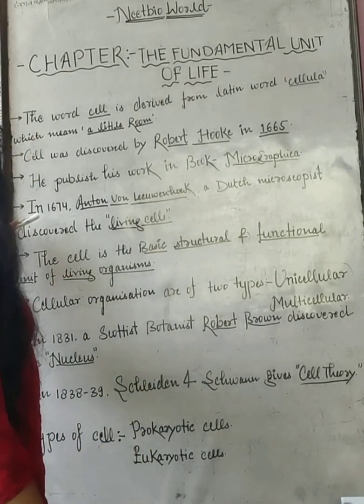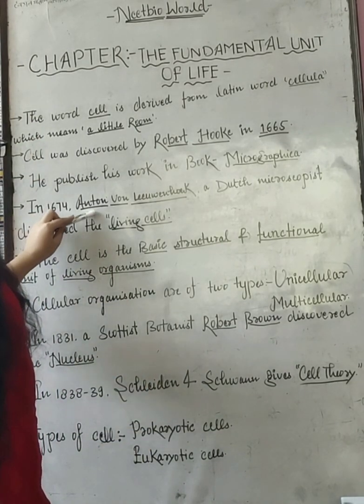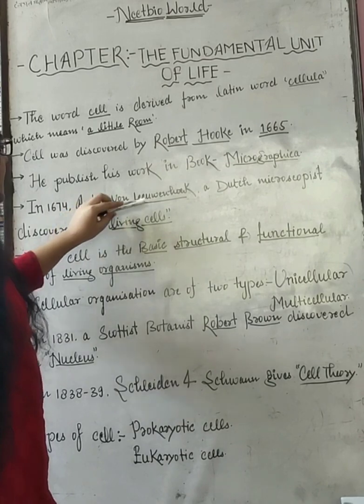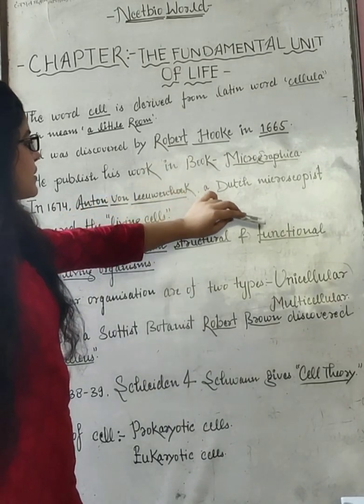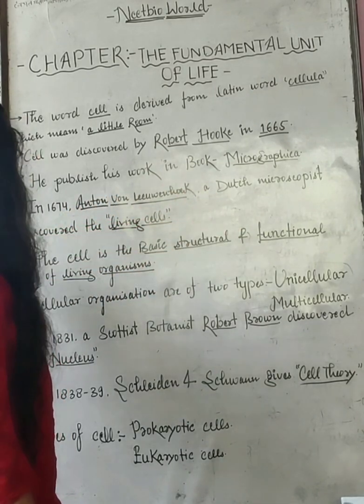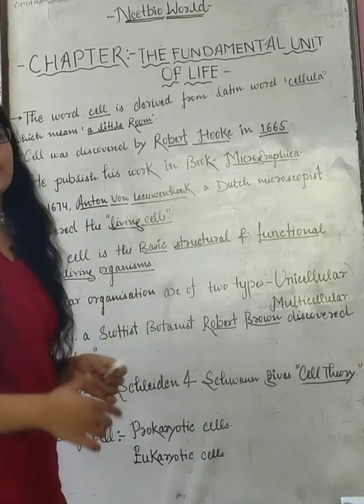Fourth point: in 1674, Anton von Leeuwenhoek, a Dutch microscopist, discovered the living cell.